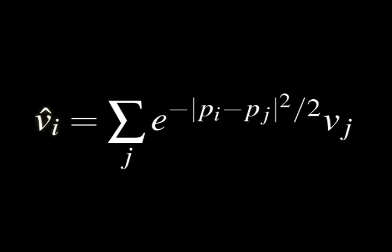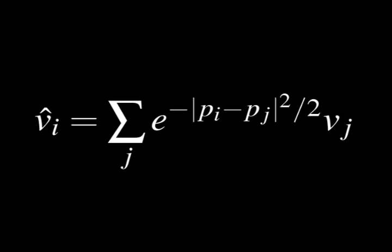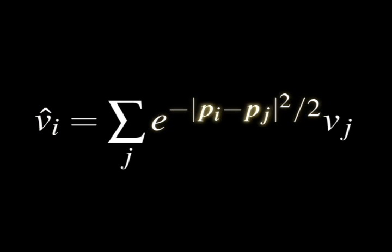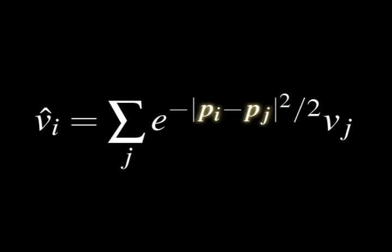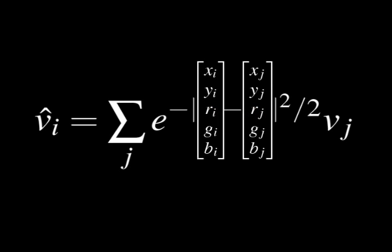Each homogeneous value Vi is replaced by a weighted sum of all other values Vj. Each value is associated with a position Pi in some other space. The weights are determined by a Gaussian function of the distance between two positions. If the values are pixel colours and we set the positions to be xy locations, then this equation expresses a Gaussian blur. If we instead set the positions to be 5-dimensional xy RGB vectors, this expresses a bilateral filter, which mixes pixels according to their distance in both space and colour.